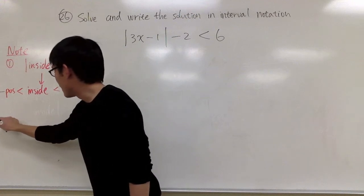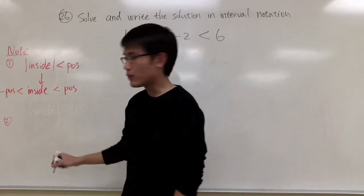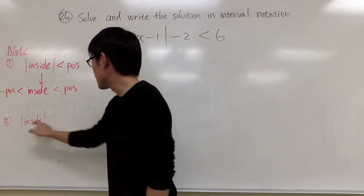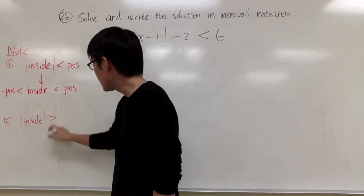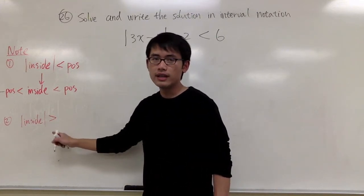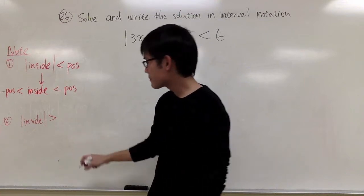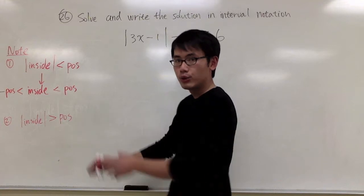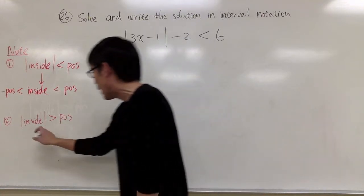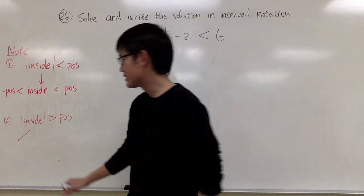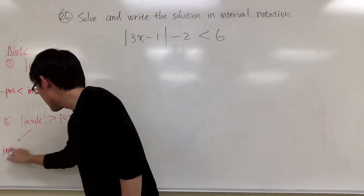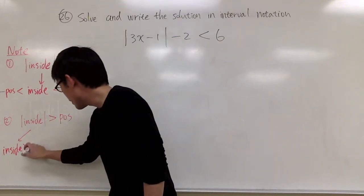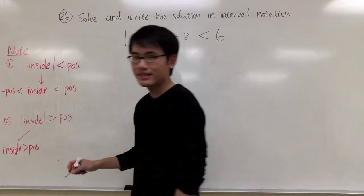We also have a different situation. If the case is that the absolute value of something inside is greater than — or greater than or equal to — some positive number, then to handle this situation I will break it down into two parts. The first part: I just write down the inside expression, greater than whatever the positive number is. Nothing changes for the first part.